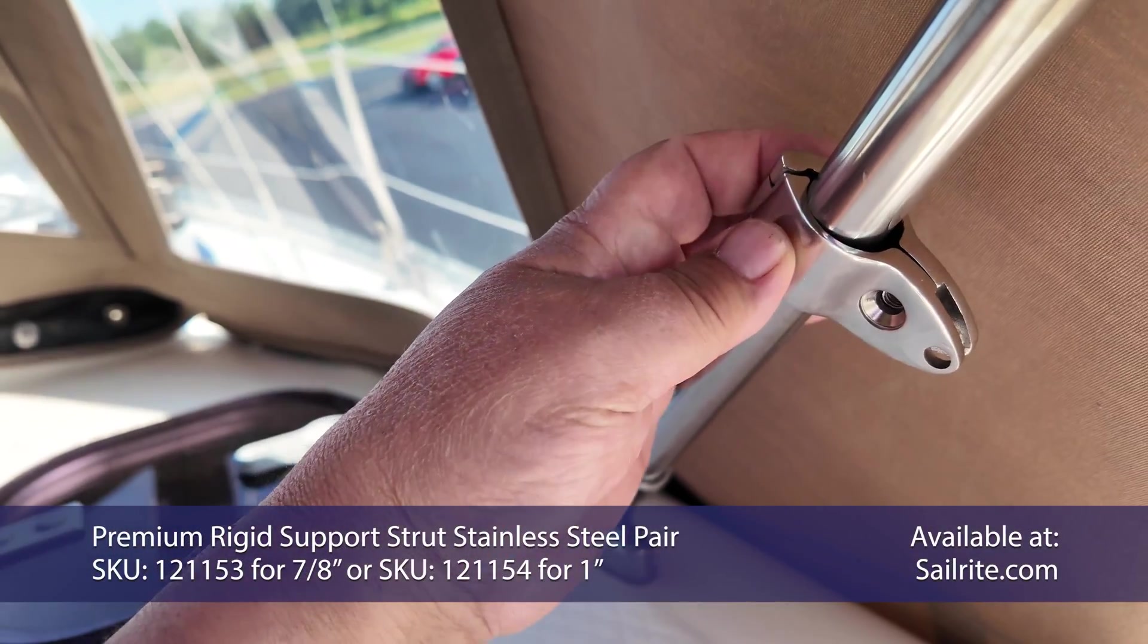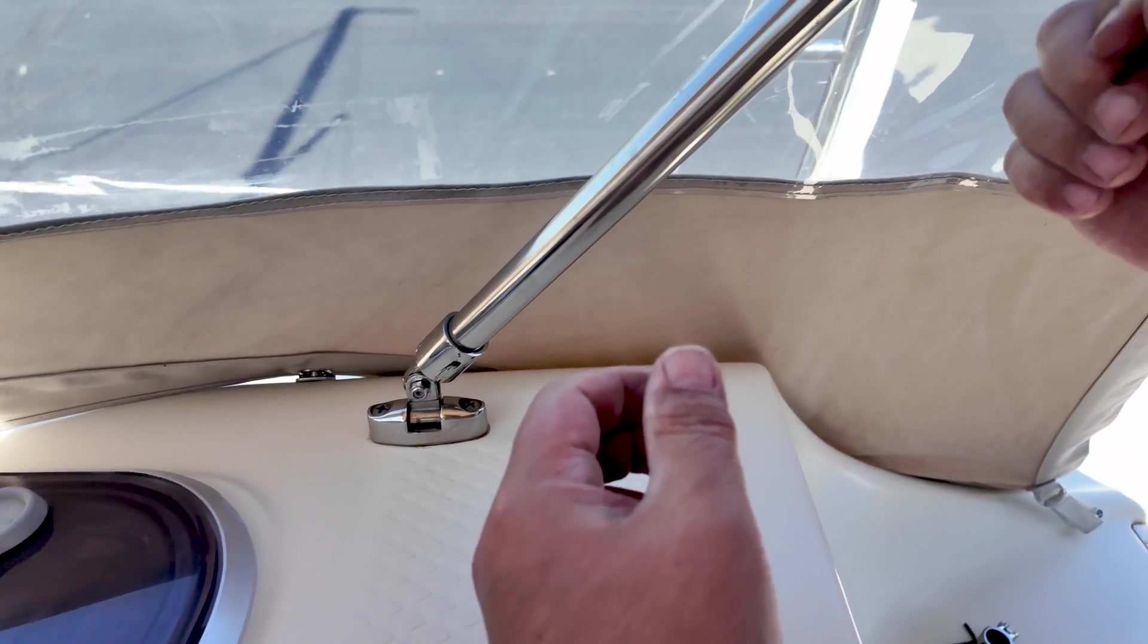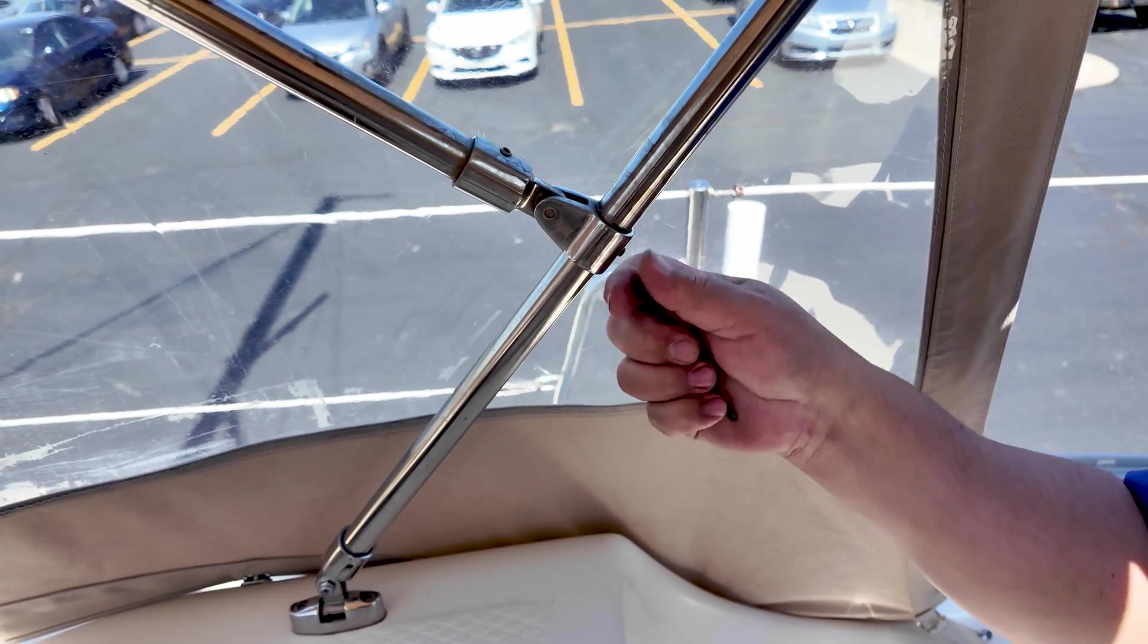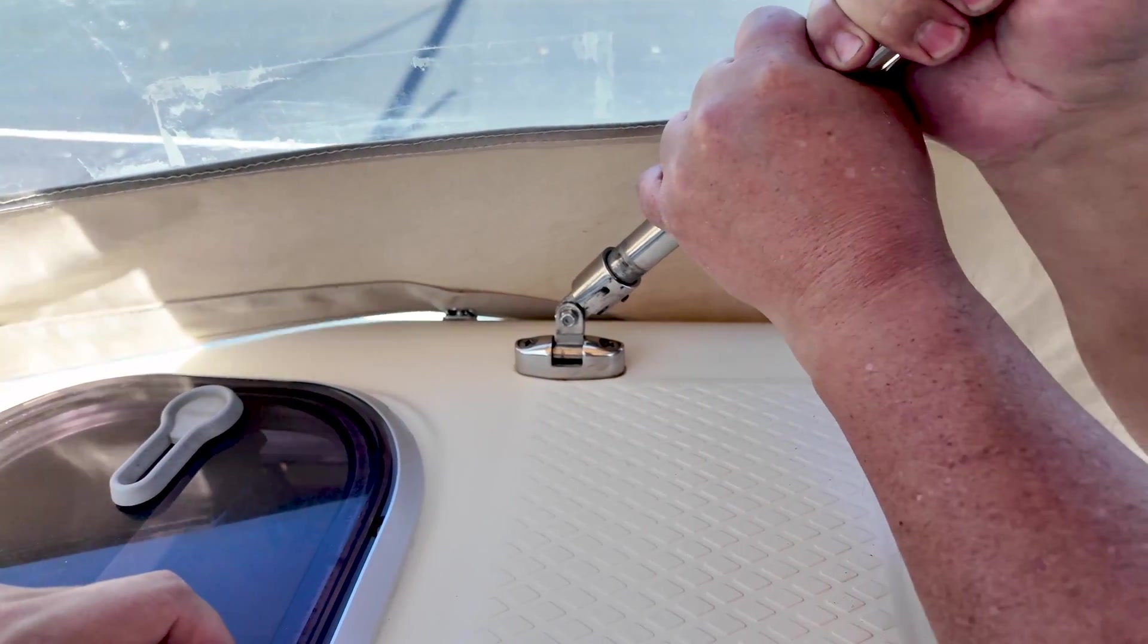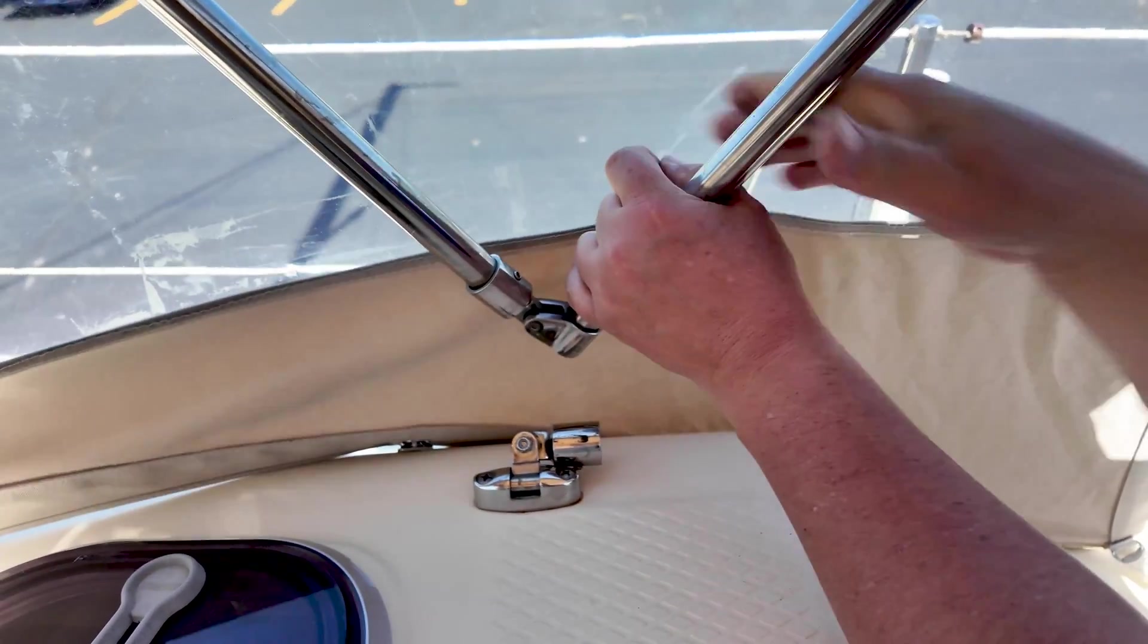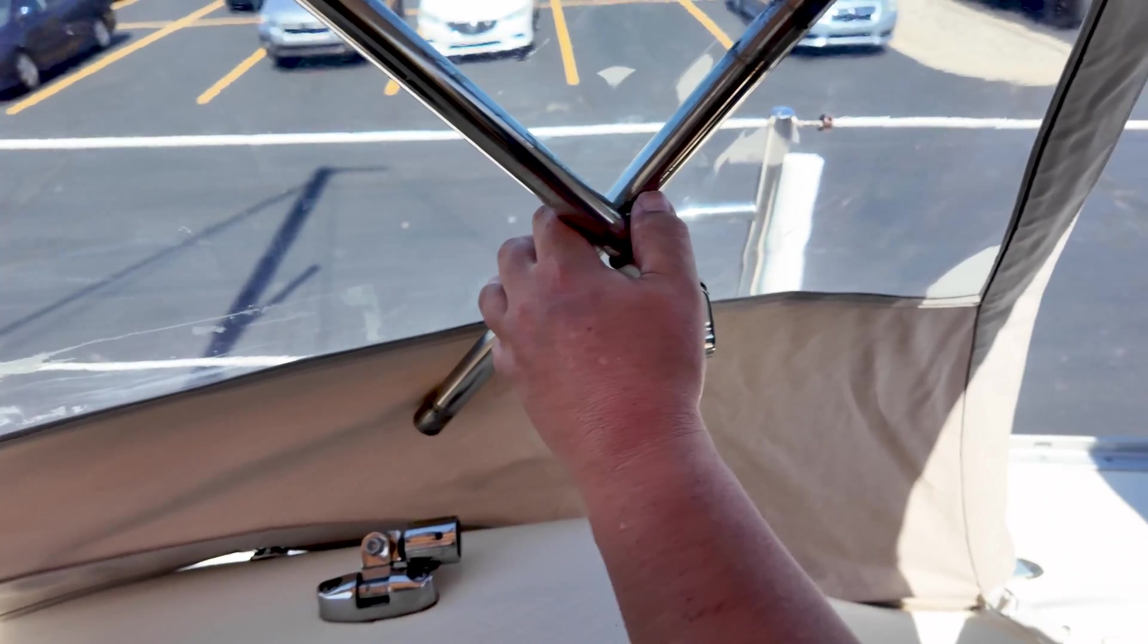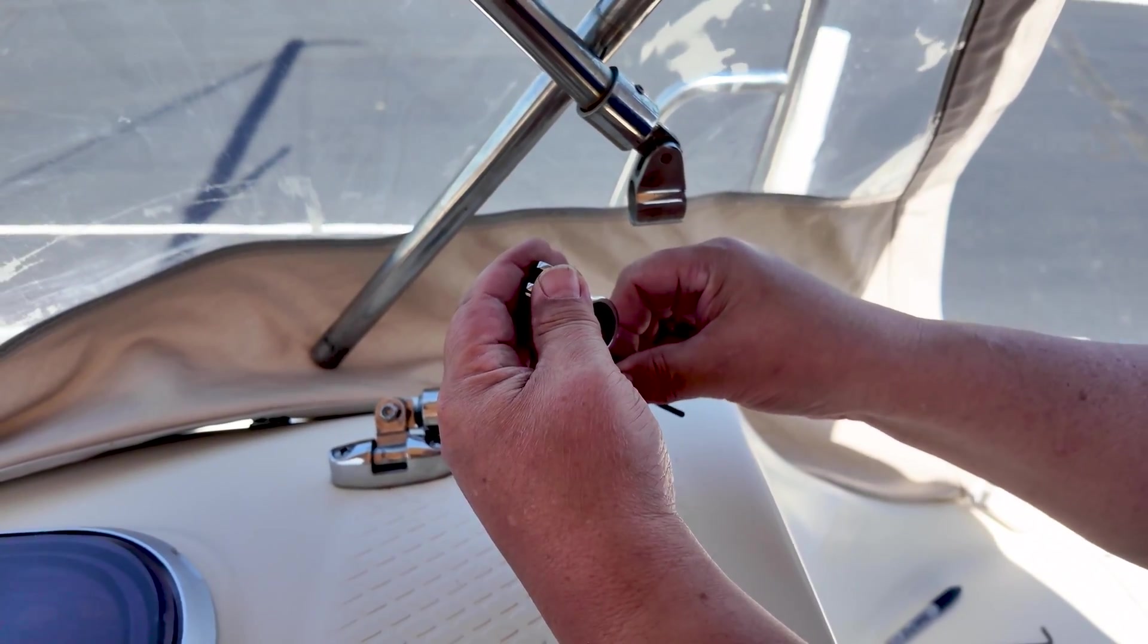This type of hinged jaw slide is included in the premium rigid support strut kits. But for us, we're simply going to remove this hardware and reinstall it back the way it was. I'm going to put a marker mark here to indicate where this was. We're going to release these set screws here and also down here. This has to come down. Sometimes it's hard at the end.